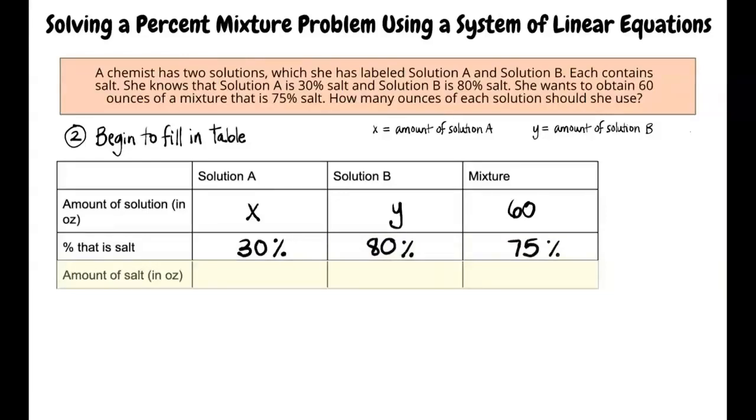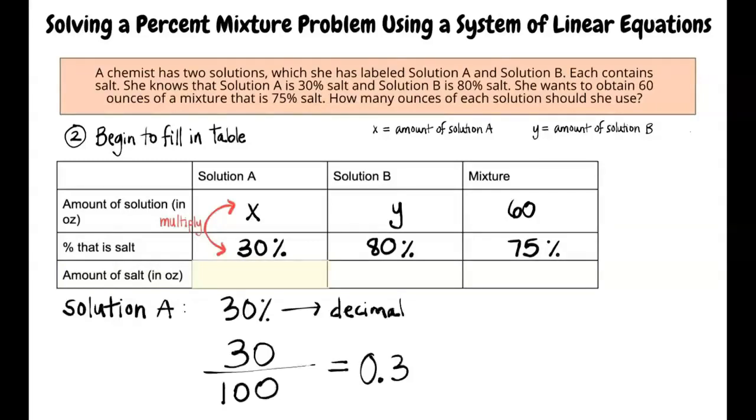The third row is for information about the amount of salt in ounces in each solution. We can calculate this by multiplying the amount of solution and percent salt together for each solution. For solution A, the amount of salt in the solution will be x times 30%. First we must convert the percent to a decimal. Divide 30 by 100 and write 0.3. Now we can multiply it by x and write in the box 0.3x.